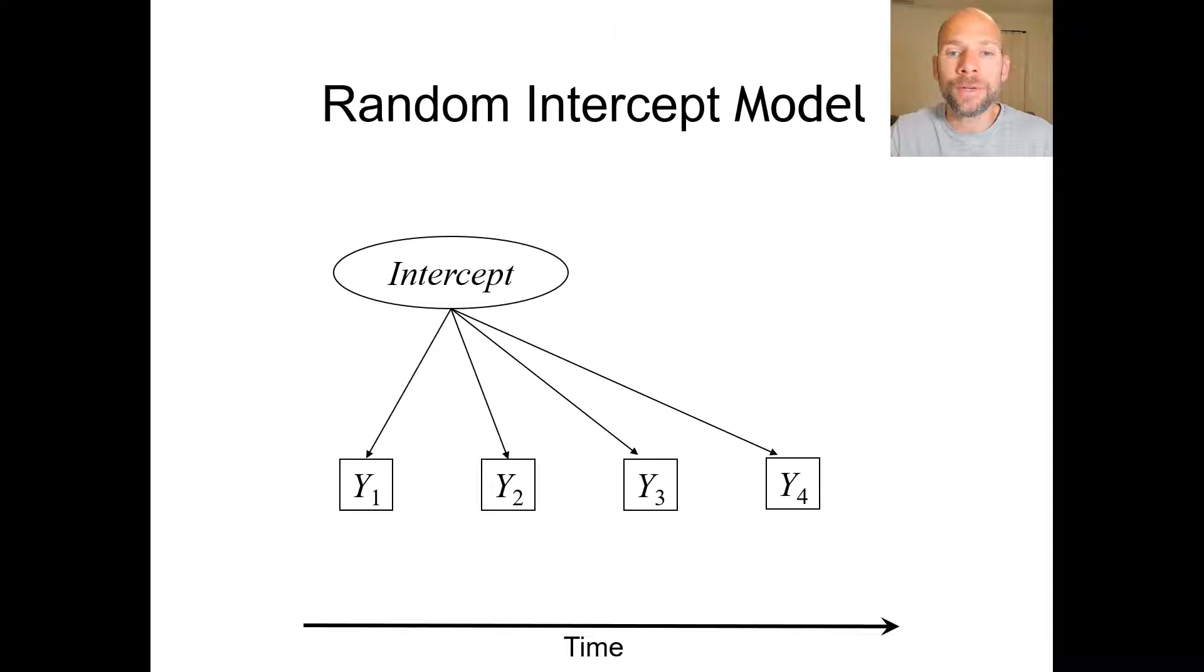In a random intercept model we introduce a latent factor that we might call an intercept factor or random intercept, and this intercept factor has equal loadings on all repeated measures indicators. So every indicator, every variable at each time point has a loading of one on this intercept factor, so the loadings are fixed a priori, none of the loadings are estimated.